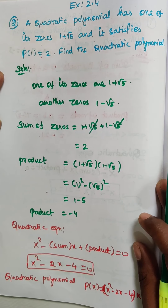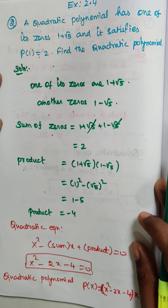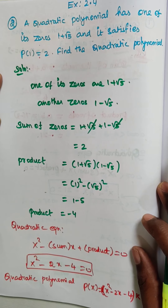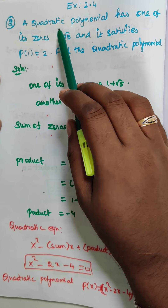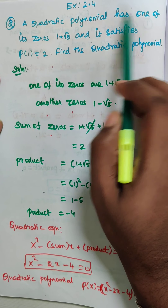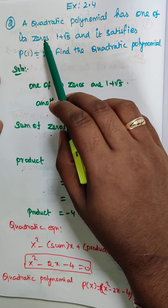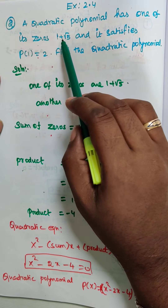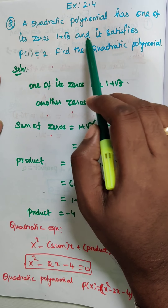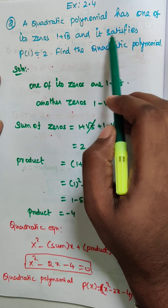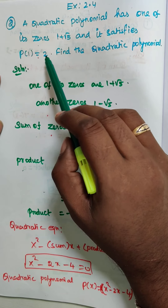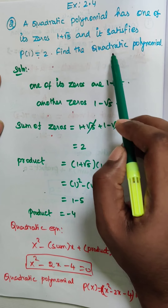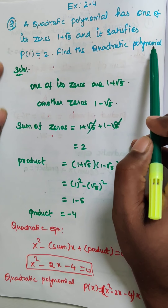Hi students, today we are going to discuss exercise 2.4, question number 2. A quadratic polynomial has one of its zeros 1 plus root 5, and it satisfies p of 1 equal to 2. Find the quadratic polynomial.